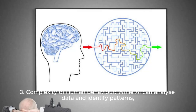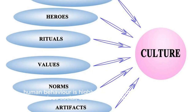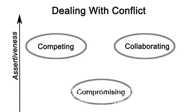Complexity of Human Behavior: While AI can analyze data and identify patterns, human behavior is highly complex and influenced by various social, cultural, and political factors. Understanding and addressing the underlying causes of conflict require nuanced approaches that go beyond algorithmic analysis.